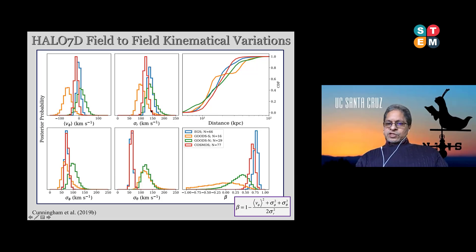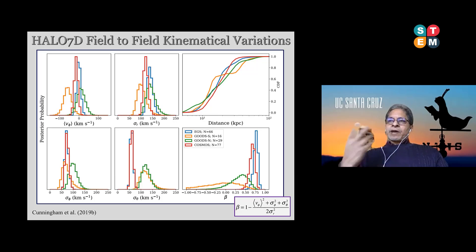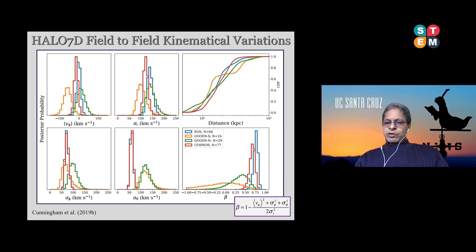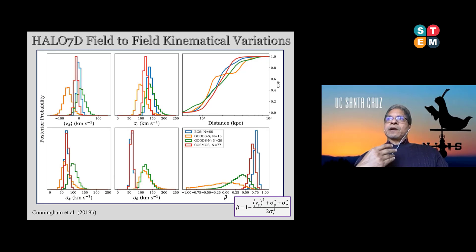The velocity distributions of stars show some similarities but also striking differences. In the lower right panel, we measured the anisotropy parameter beta — the parameter that tells you whether on average the stars are moving on radial or tangential orbits. The beta distributions are quite different for the four fields, pointing to the Milky Way halo being not smooth, but lumpy. In the upper right panel you're seeing the line-of-sight distances of these stars — six of the seven dimensions of Halo 7D: three dimensions of position and three of velocity.